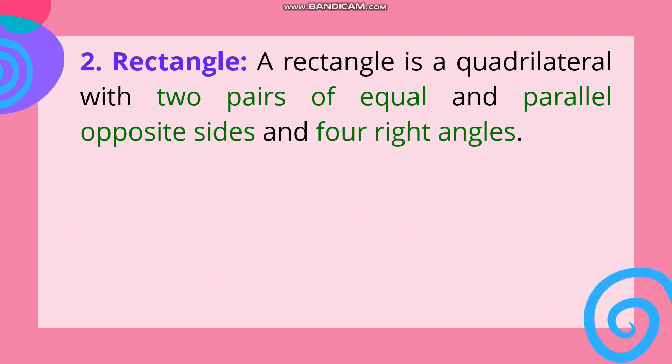Number 2: Rectangle. A rectangle is a quadrilateral with two pairs of equal and parallel opposite sides and four right angles. Ang rectangle ay may dalawang pares ng side na magkasing sukat. At kapag sinabing parallel, ito ay ang magkatapat na linya na hindi nag-intersect o nagtagpo. Tulad sa square, meron din itong apat na right angles.